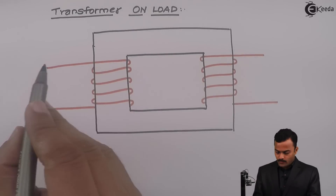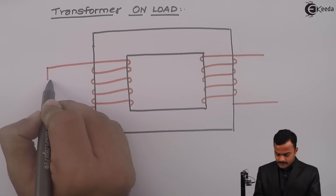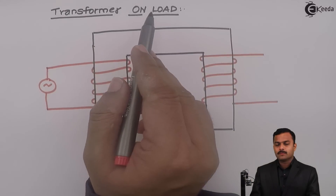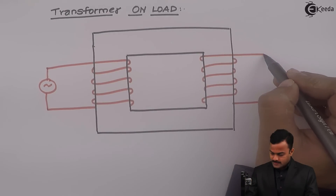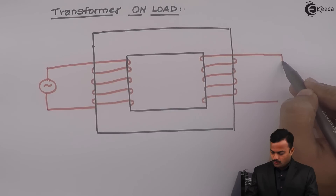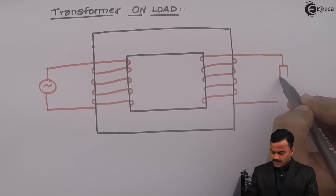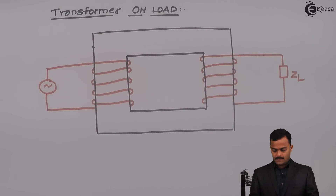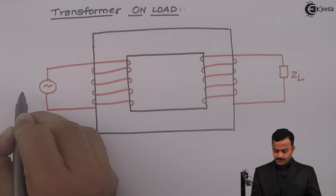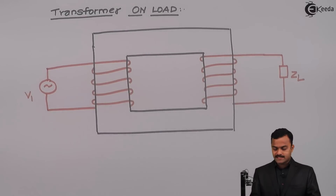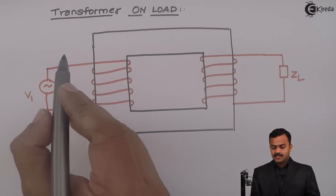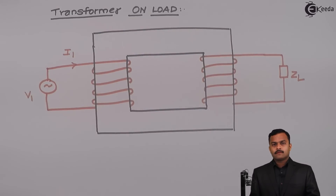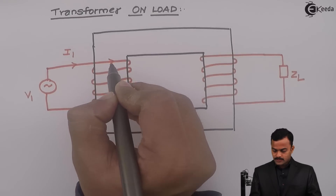If I am giving supply to the winding, that is called the primary winding. This is the primary winding, and now the transformer is loaded, so obviously there will be a load on the secondary winding. This is the voltage applied, which we call the primary voltage. Because of that we will have primary current I1, and that primary current I1 will flow through these windings.